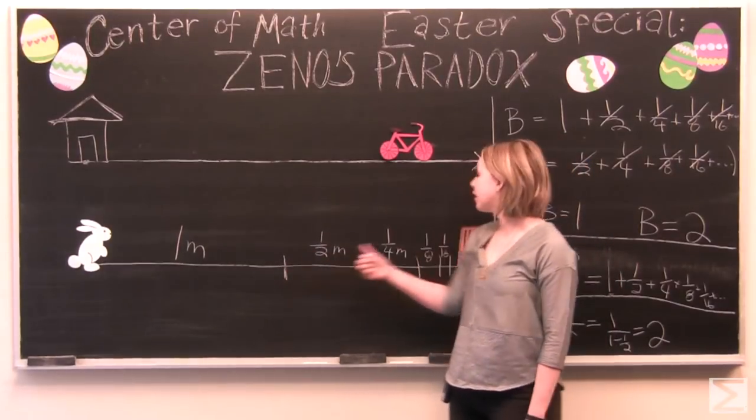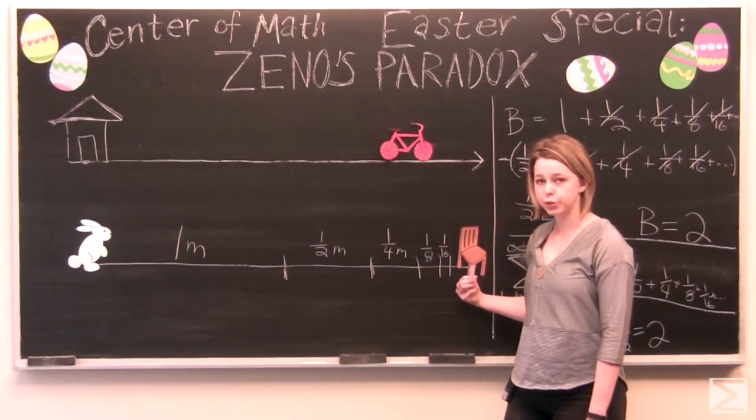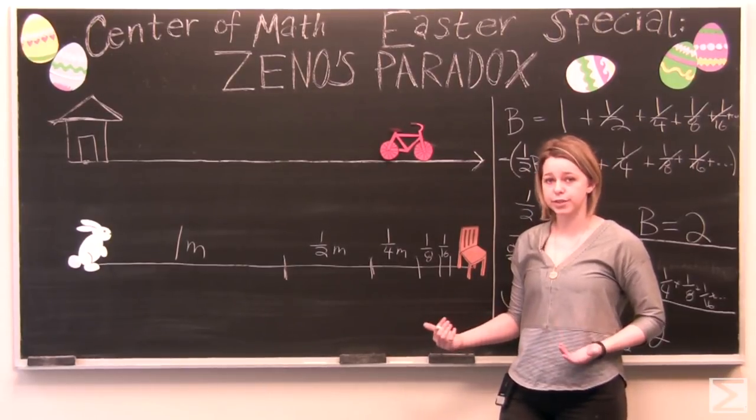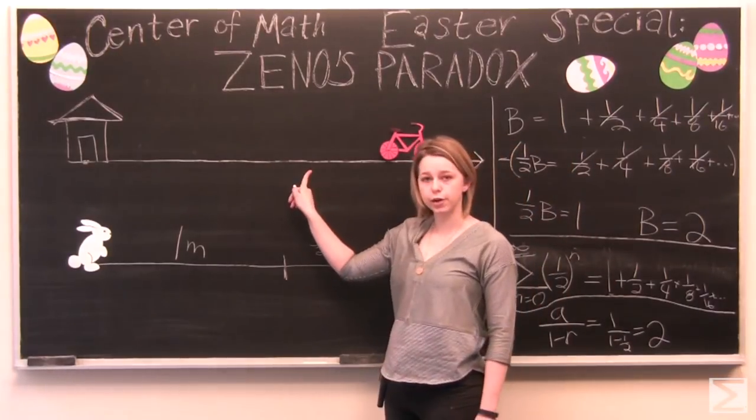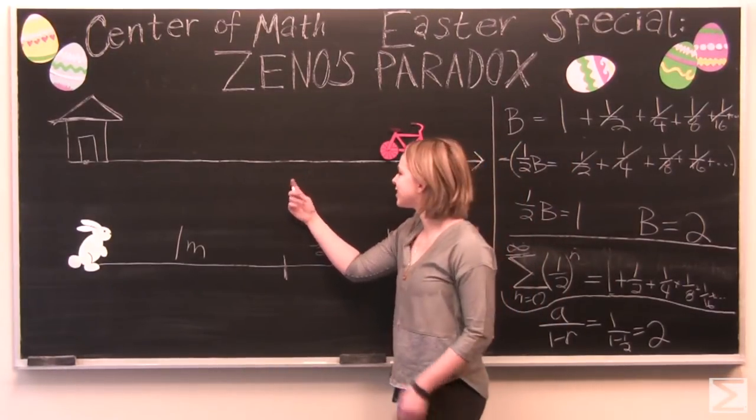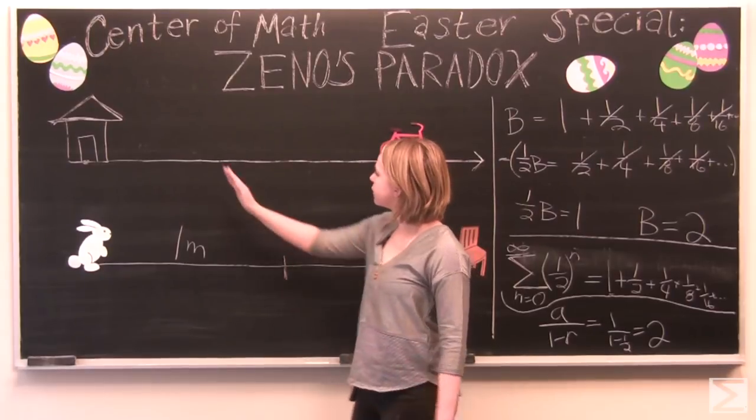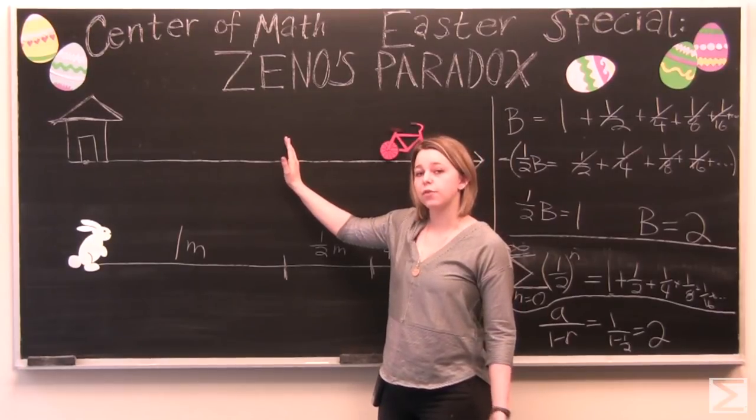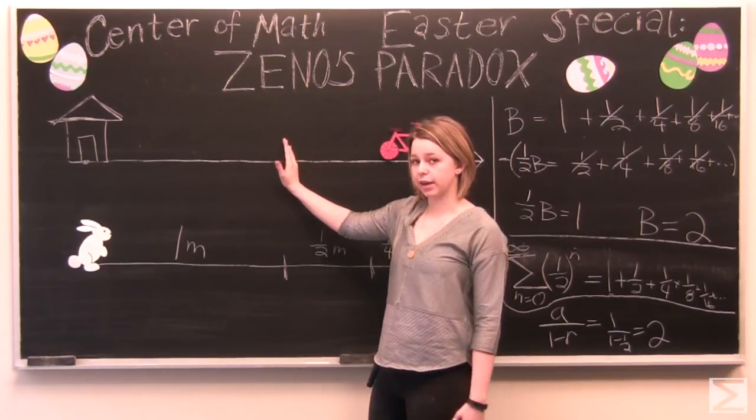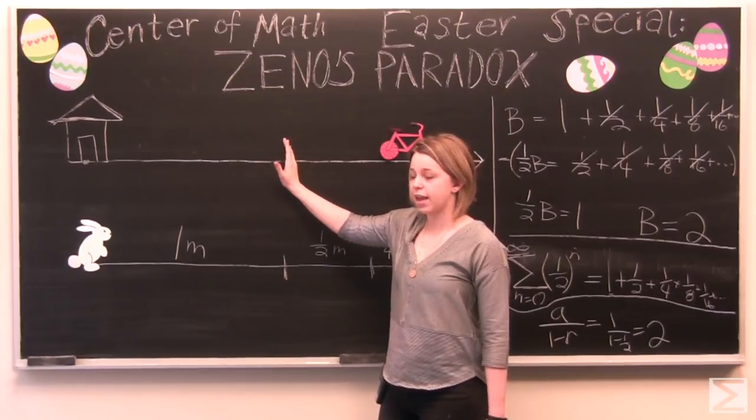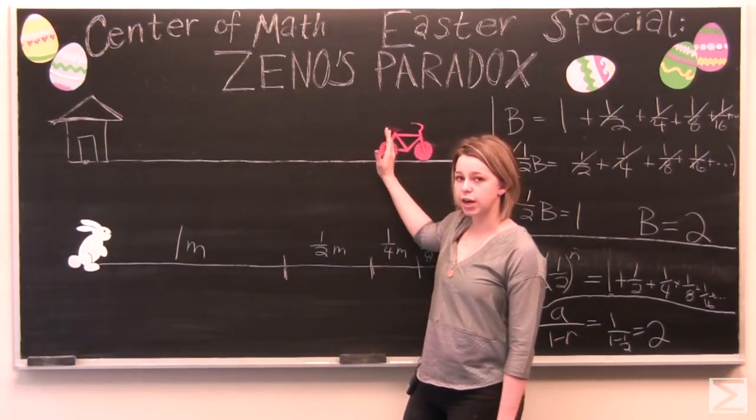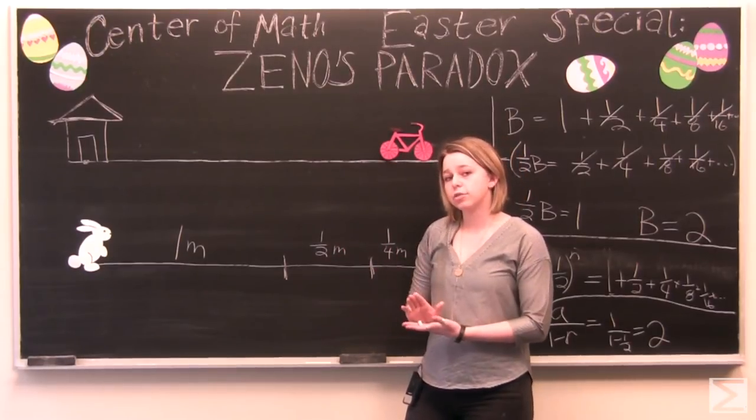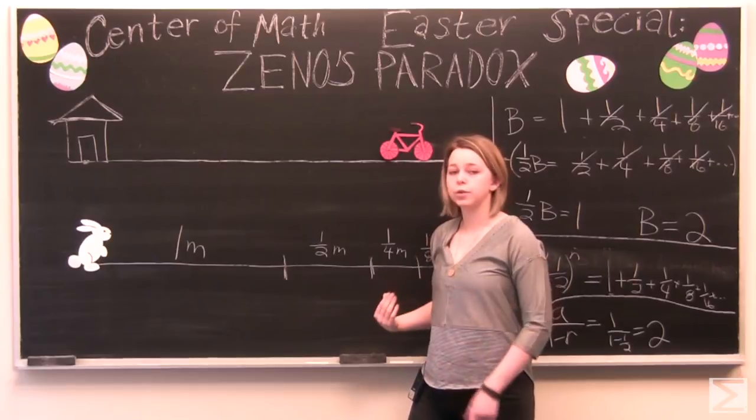But if we say that the Easter Bunny reached the chair two meters away in two seconds. Then it's safe to say that the Easter Bunny was traveling at one meter per second. And the same thing works for the first paradox. So if the first part of the equation where John had to travel 100 meters to catch up to the Easter Bunny originally. If that took one second. And then the next bit that John had to travel took one second. Then John is decreasing infinite amounts in an infinite amount of time. And we'll never catch up.